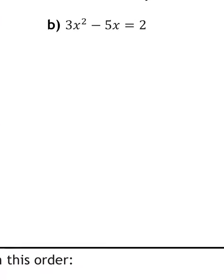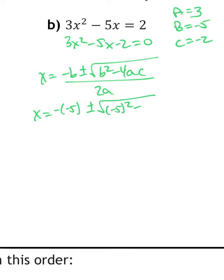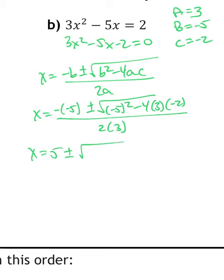Quadratic formula again. I have 3x² − 5x − 2, and it's equal to zero. So my a is 3, b is negative 5, and c is negative 2. x equals negative b plus or minus the square root of b² − 4ac, all over 2a. I highly recommend writing that down every time. So I have negative negative 5 plus or minus the square root of negative 5 squared minus 4 times a times c, all over 2a: 5 plus or minus the square root of 25 plus 4 times 3 times 2 equals 24, all over 6.